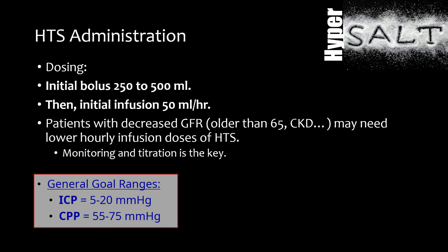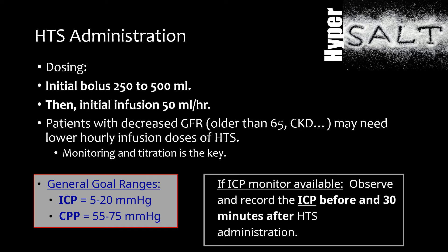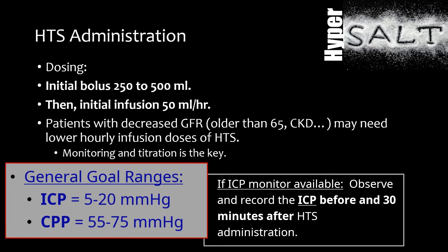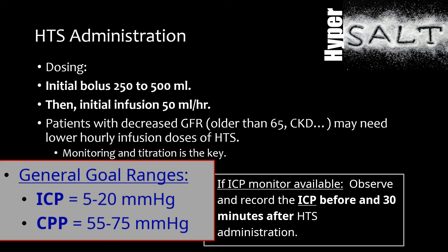Monitoring and titration is the key. General goal ranges are an ICP target between 5 and 20 millimeters of mercury, and a CPP of 55 to 75 millimeters of mercury. If an ICP monitor is available, observe and record the ICP before and 30 minutes after hypertonic saline administration. Either way, monitor the neurologic exam, including GCS and pupils.